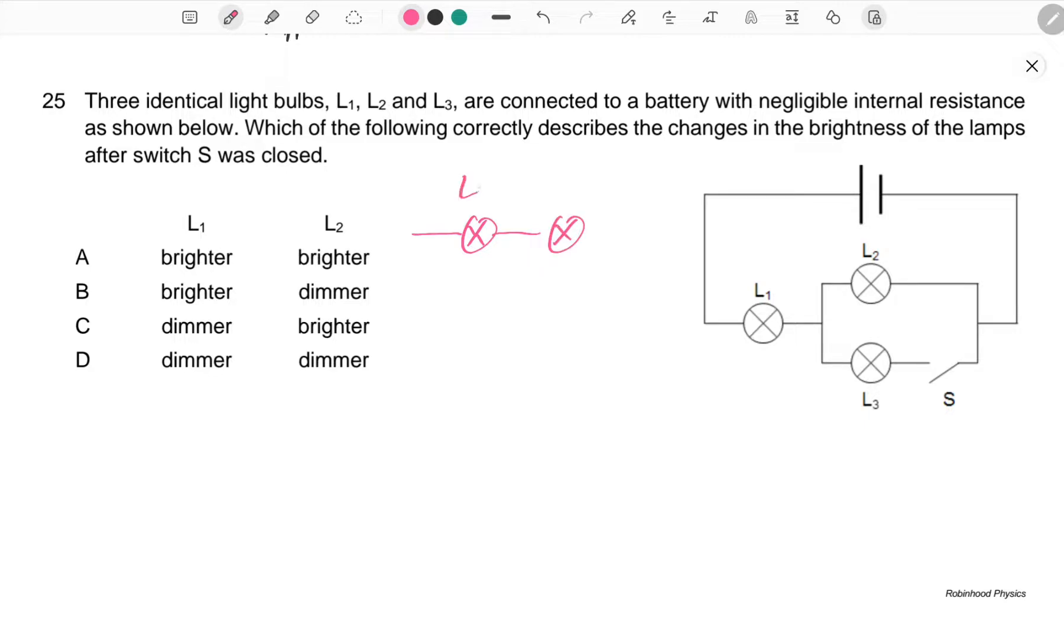like this. This is L1, this is L2. When it's closed, it looks like this: L1 and L2 and L3. Here, the voltage across here would be—let's call the whole thing V.